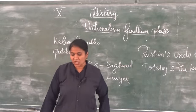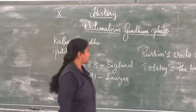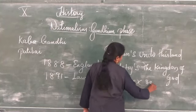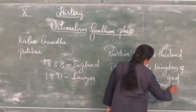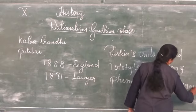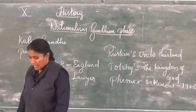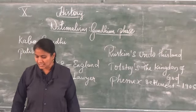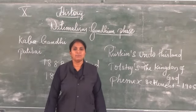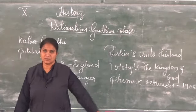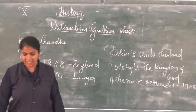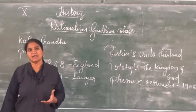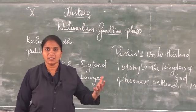Inspired by Ruskin, Gandhiji established the Phoenix Settlement in the year 1905 and the Tolstoy Farm in the year 1910. Equality, community living, and dignity of labor were the important aims of these settlements. Satyagraha was the tool he took in hand to fight for the Indians to get their rights.